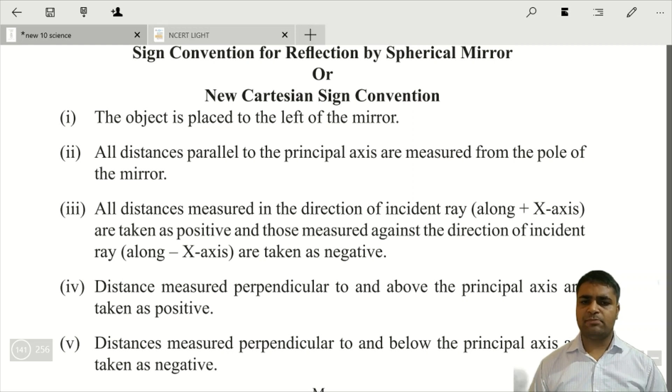The first point is that the object is placed to the left of the mirror. Object ko humesha hum kahan pa rakhengi? Mirror ke left mein.